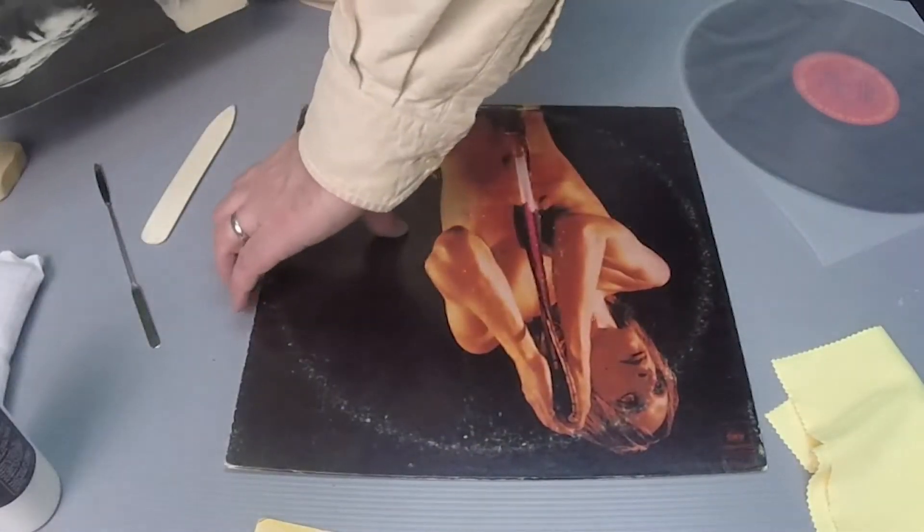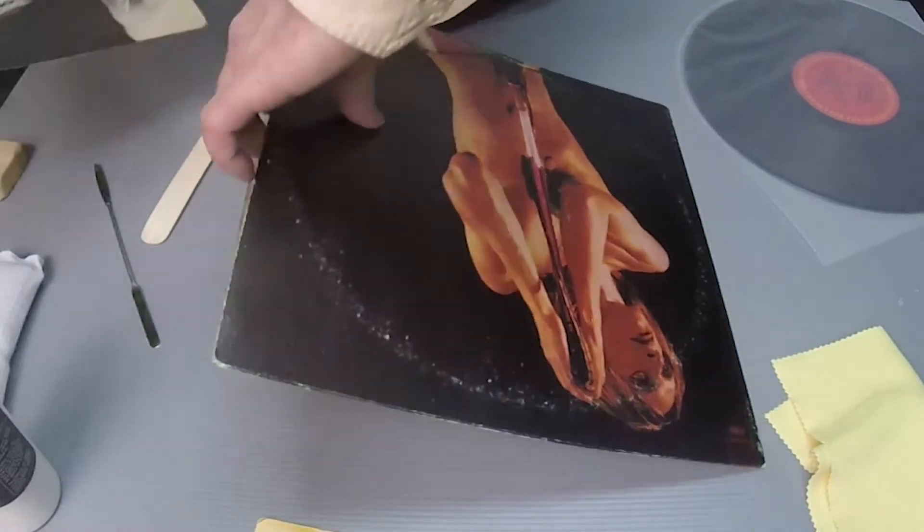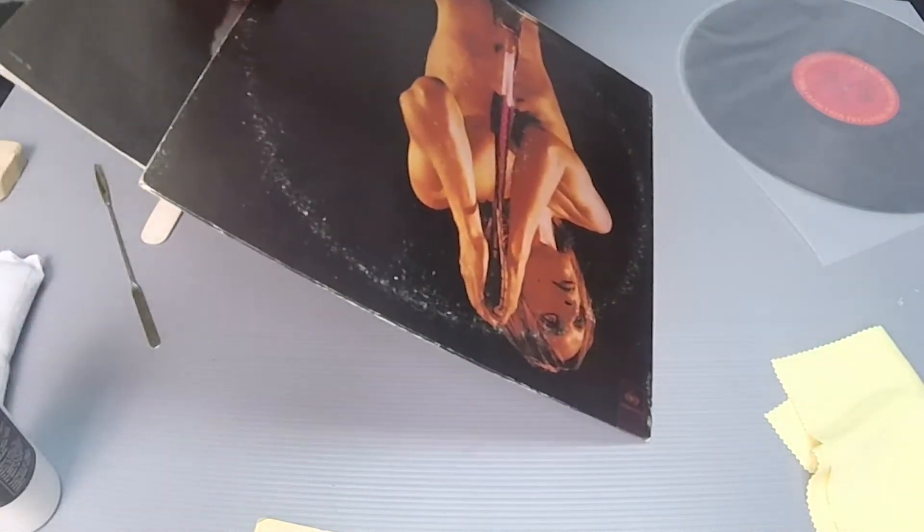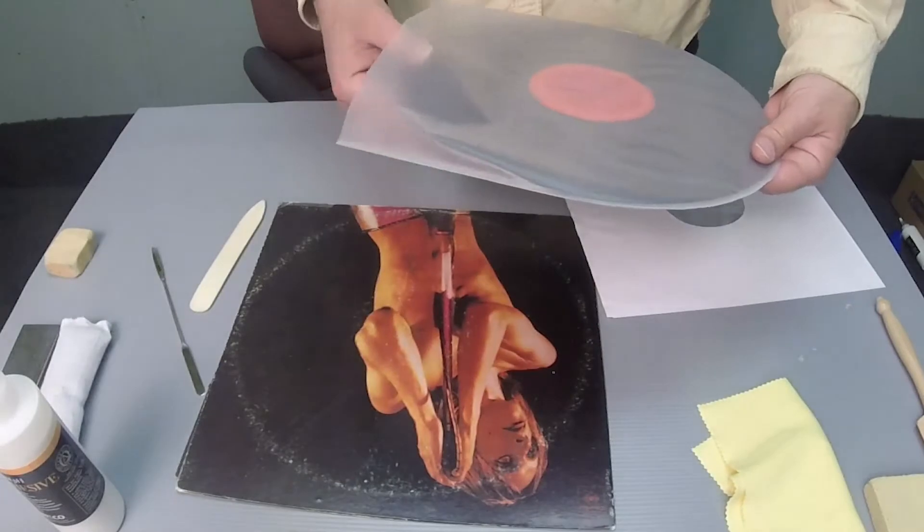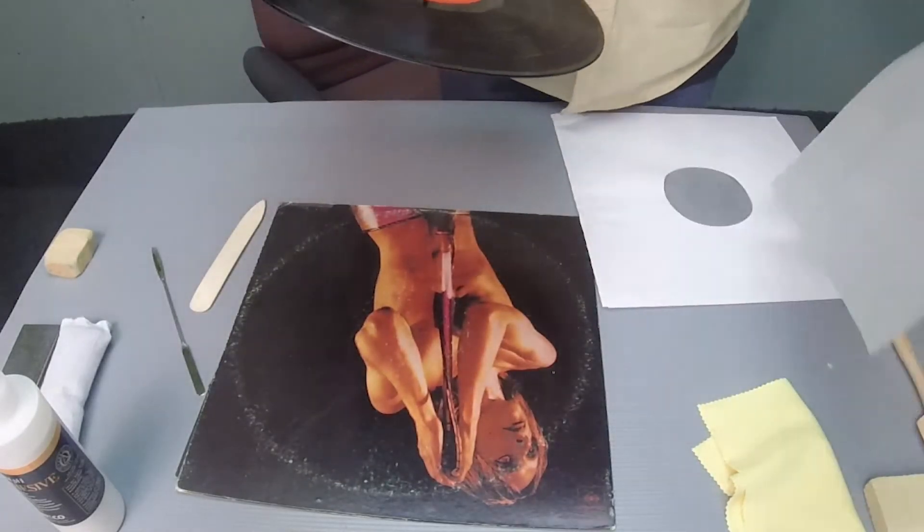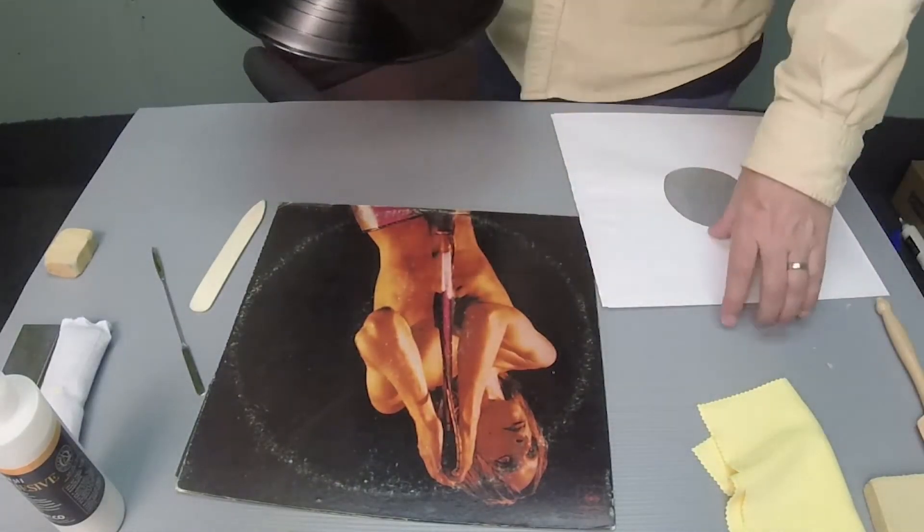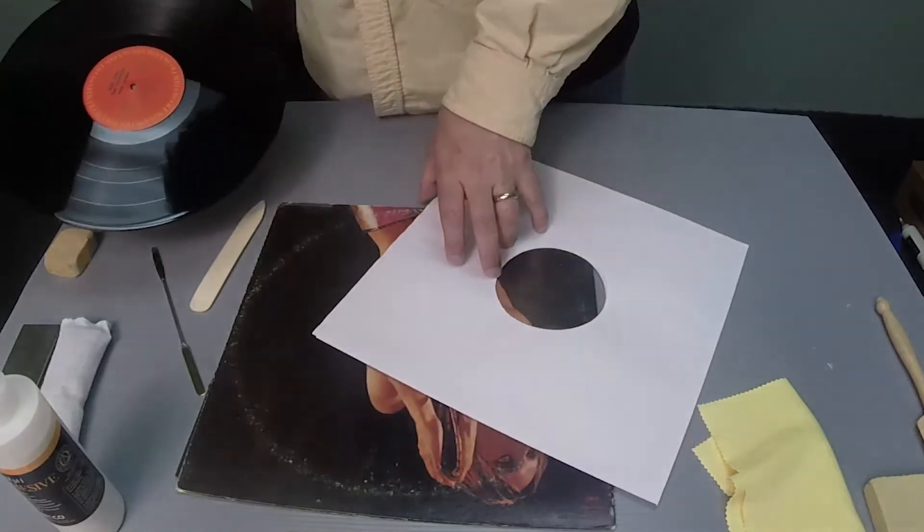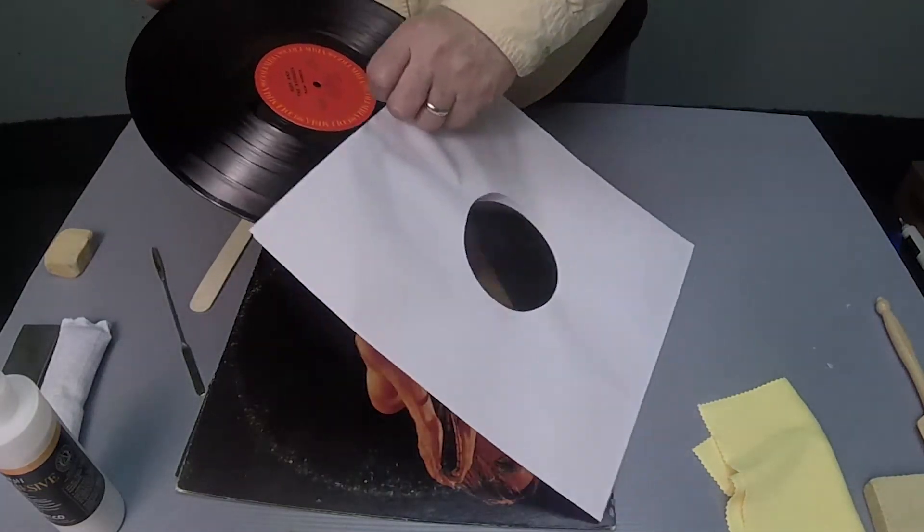Now with the repair done, it is time to prepare Iggy for storage. First I want to upgrade the inner sleeve to a poly-lined paper sleeve. This provides excellent protection for the record but resists bunching and crumpling like pure poly sleeves tend to do.